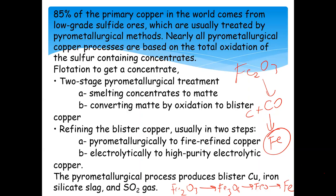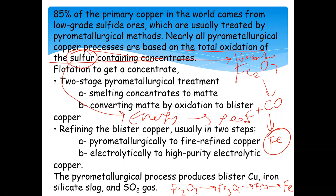85% of the primary copper in the world comes from low-grade sulfide ores, which are usually treated by pyrometallurgical methods. Nearly all pyrometallurgical copper processes are based on total oxidation of sulfur-containing concentrates. When you see sulfur, this is a hazardous material. But when you oxidize this sulfur, it gives off energy, which is good. Using this energy, you can carry out your process without adding additional energy — you don't need to supply additional energy from outside.